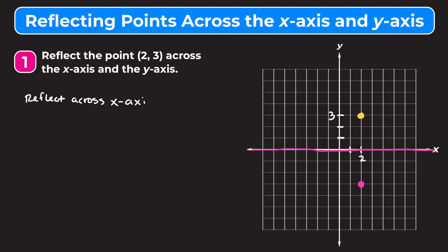That's going to be our pink point. I'll draw the tick marks in — we go 1, 2, 3 downward — so it lands at the point (2, −3). When you reflect something across the x-axis, you may notice that the y-coordinate changes signs.